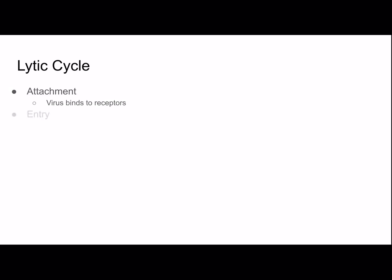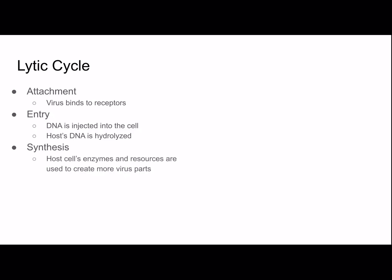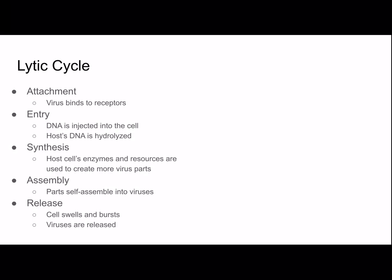The lytic cycle has five main stages. First is attachment, where the virus binds to the receptors on the cell. Then entry, where DNA is injected into the cell and the host's DNA is hydrolyzed. Then synthesis, where the host cell's enzymes and resources are used to create more virus parts. Then assembly, where the parts self-assemble into viruses. Finally, release — the cell swells and bursts, a process called lysis, and the viruses are released to infect another cell.